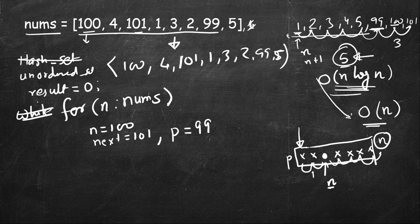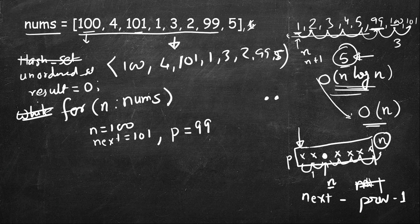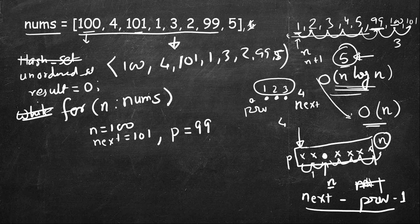Once we can no longer find next or previous, the length of the sequence is: next minus previous minus 1. For example, if we have 1, 2, 3 and next is at the fourth value while previous is at zero, then next minus previous equals 4, but we have one less, so the formula is next minus previous minus 1.